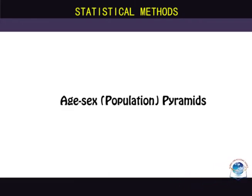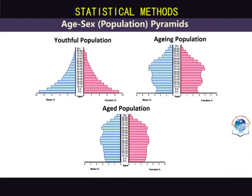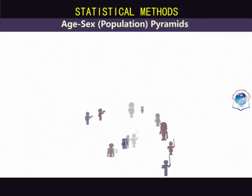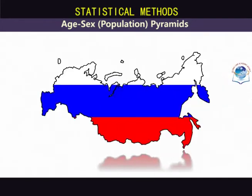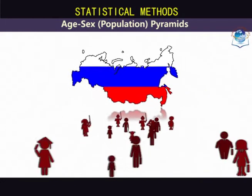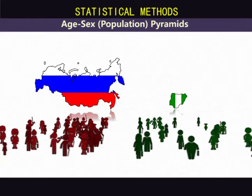Age-sex pyramids, also called population pyramids, are used to provide a visual presentation of demographic data or data on human population. Consider a country like Russia, which is the largest in the world. Russia has the same population as Nigeria, even though Nigeria is 16 times smaller.